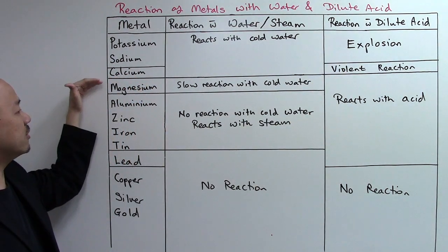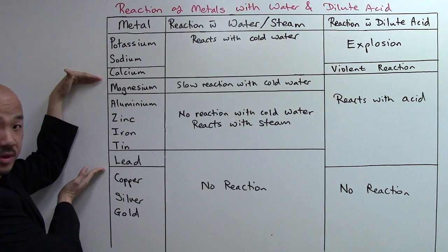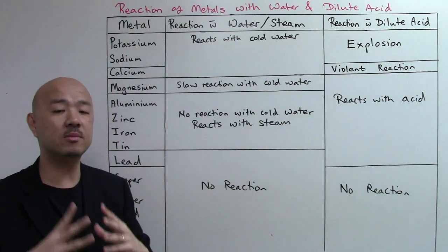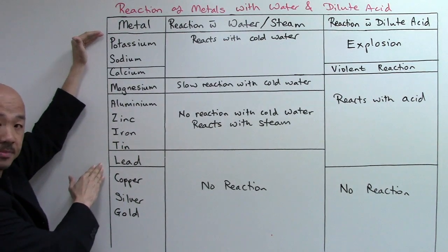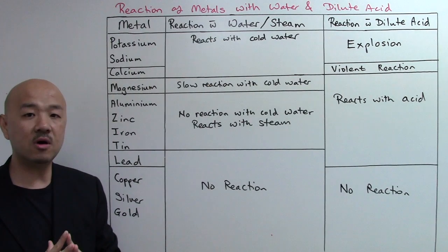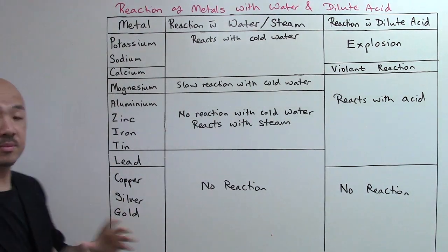From magnesium all the way to lead, they will react with acid and form your ionic salt and hydrogen gas. So all in all, potassium to magnesium will all react with dilute acids to form ionic salt and hydrogen gas, with the first three being very reactive.